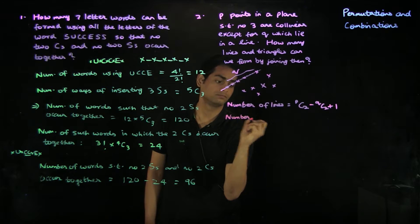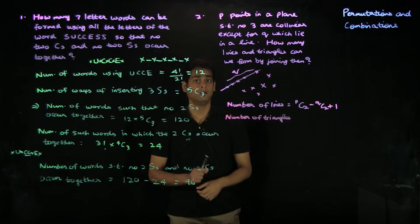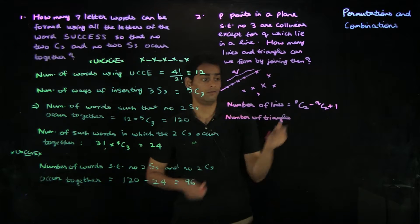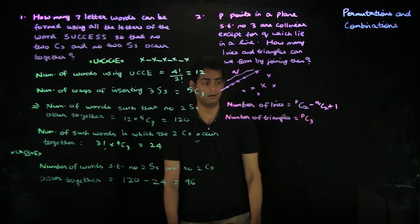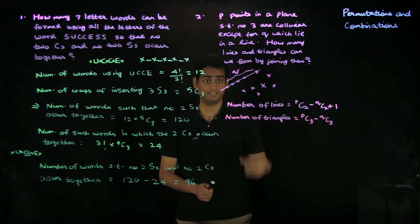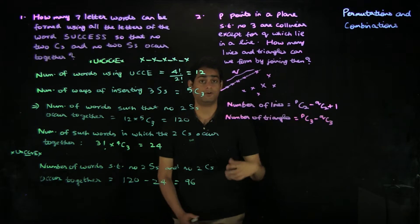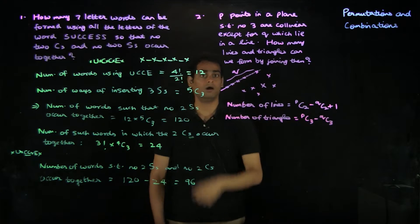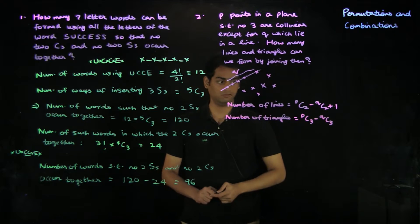For the number of triangles, we need to choose three points which are not collinear. If all P points were such that no three are collinear, we would have PC3 triangles. But we have Q collinear points lying on the same line, so we must subtract QC3 — the choices of three points from within those Q points. Any other choice — two points from this line and one outside, or one from the line and two outside, or three entirely outside — still gives a triangle. So the number of triangles is P choose 3 minus Q choose 3.